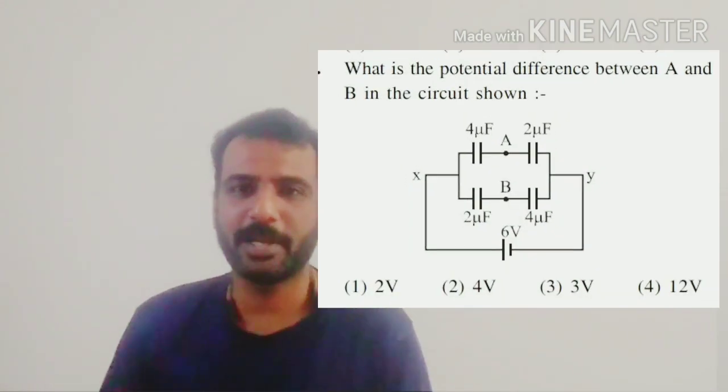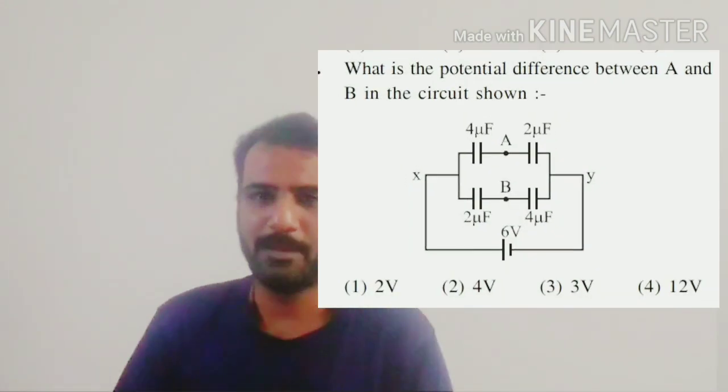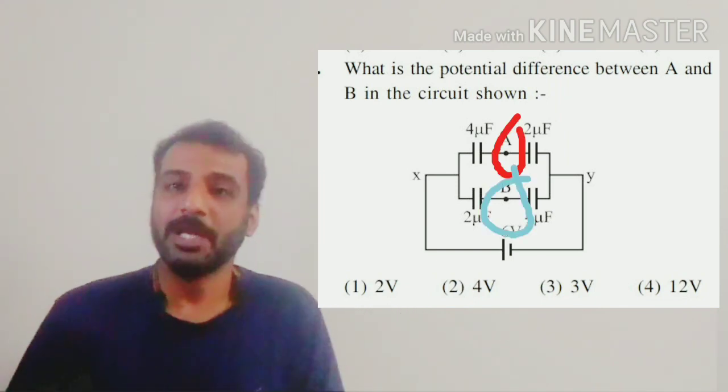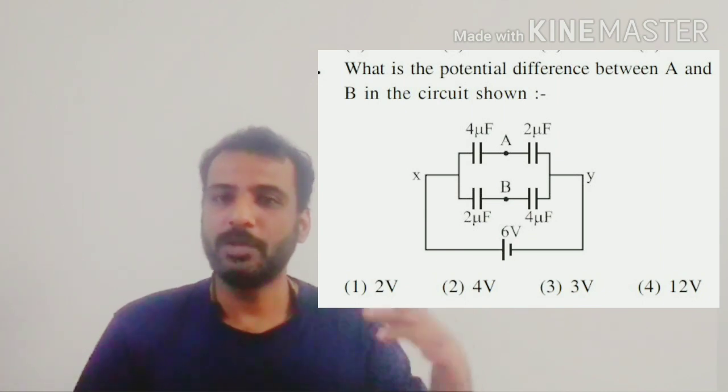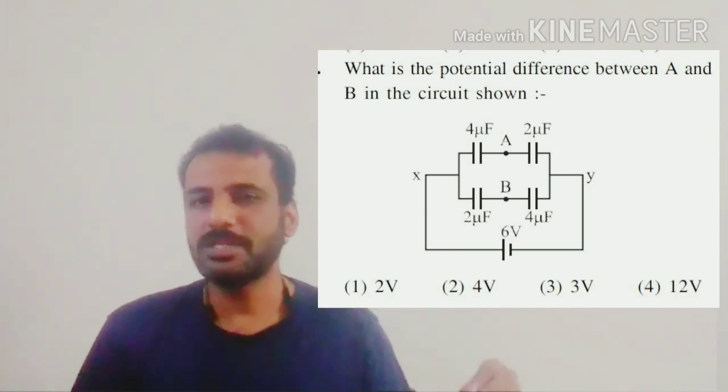The two points are not connected by any current element like a resistor or a capacitor. The expressions to find potential difference V equals IR is only across a resistor and V equals Q by C is only across a capacitor.